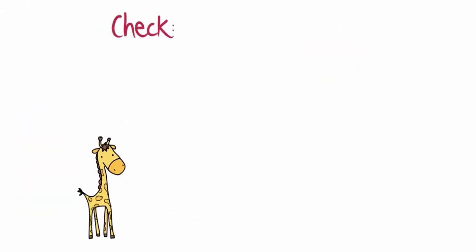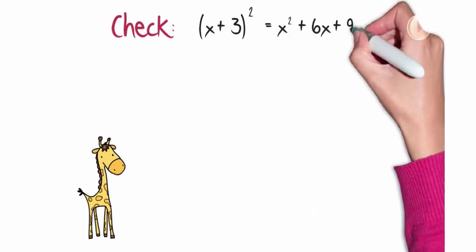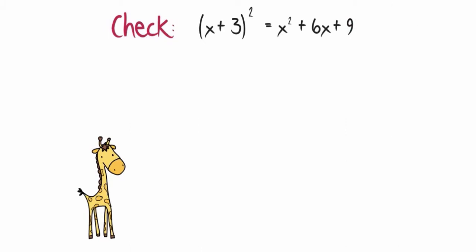Now let's go ahead and check that problem. We are saying that x plus 3 quantity squared is equivalent to the expanded form, which was x squared plus 6x plus 9. If this is correct, it would be true for all values of x.